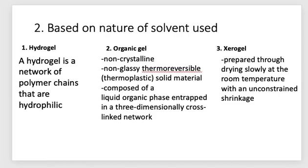Classification based on the nature of solvent used gives three types: hydrogel, organic gel, and serogel. A hydrogel is a network of hydrophilic polymer chains that contain water as their continuous liquid phase. Organic gels are non-crystalline, non-glassy, thermoreversible or thermoplastic solid materials composed of a liquid organic phase trapped in a three-dimensionally cross-linked network. They contain a non-aqueous solvent as a continuous phase.